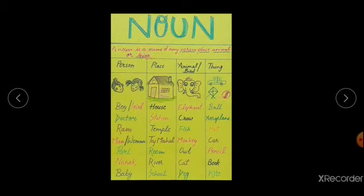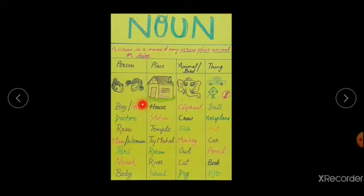I made a fun activity with the help of these rows. It will be helpful to understand noun better. There are four rows: person, place, animal, and thing. Person denotes every people and the special name of people like Ram and Pari. See some other examples: boy, girl, doctor, man, woman, Pari, Nanak — these are special names. Baby.